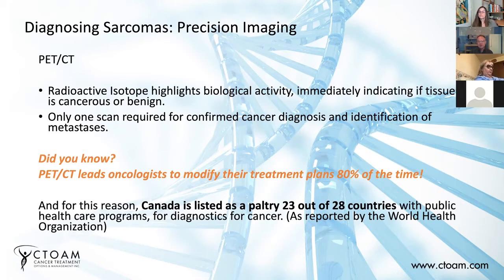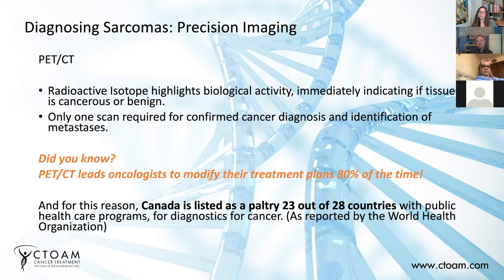Interestingly, when a patient gets a PET-CT after their diagnosis, it changes the treatment or requires the oncologist to modify the treatment in at least 80 to sometimes 90% of the time. We've seen cases where patients are told they're cancer-free, we get them a PET-CT, and sure enough they have tumors that were not discovered. That's very important because if those tumors had been left to grow, they would have metastasized and that would have been a real problem.